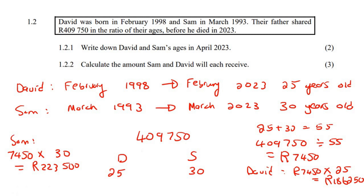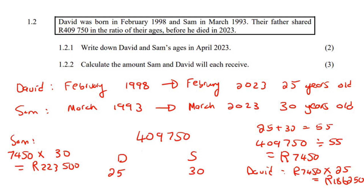We can verify by adding both amounts together: 186,250 plus 223,500 equals exactly 409,750 Rand. This confirms that the calculation has been done correctly.